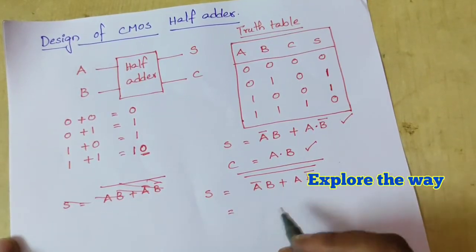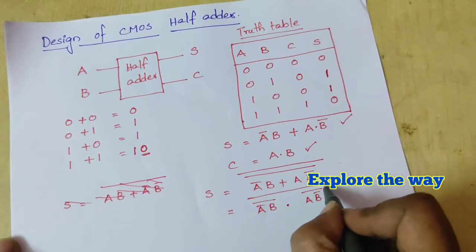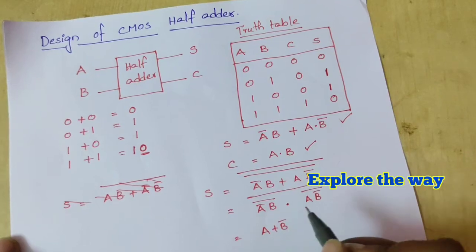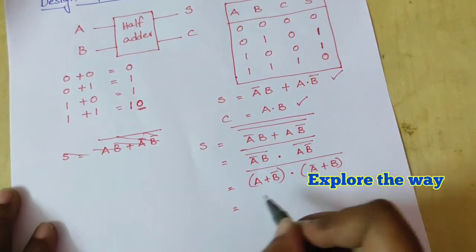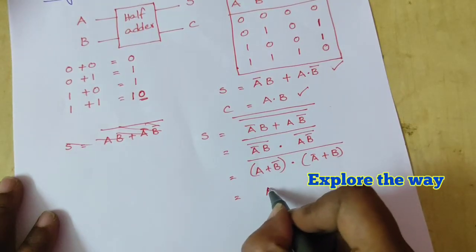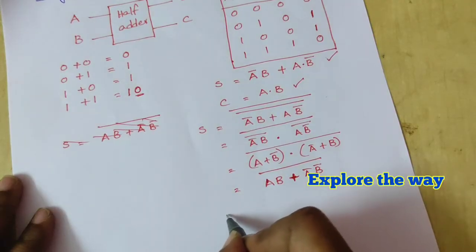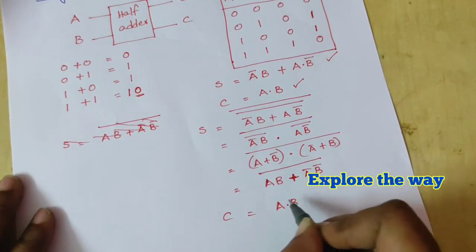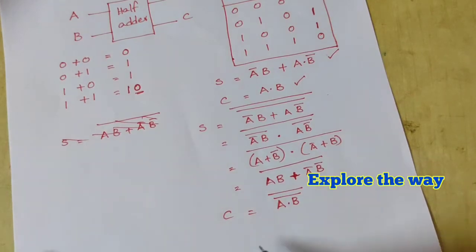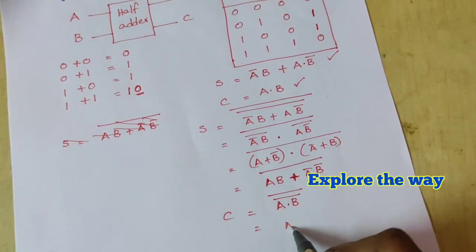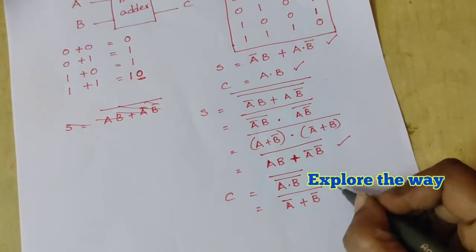For sum: S = (A-bar·B-bar · A·B-bar)-bar, which equals (A+B)-bar · (A-bar+B)-bar, which simplifies to (AB + A-bar·B-bar)-bar. Similarly, carry can be expressed in whole complemented form: C = (AB)-bar whole bar, which equals (A-bar + B-bar)-bar.